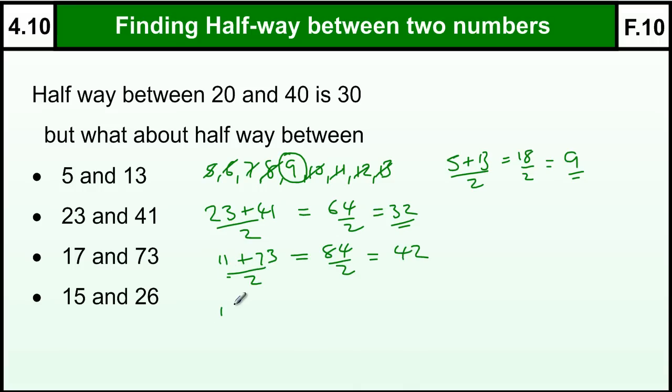And 15 and 26, now this is quite a tricky one. 15 plus 26 is 41, and half that, well half of 40 is 20, and half of 1 is 0.5. So 20.5 would be halfway between 15 and 26. Okay, so that technique will always work, and it's much quicker than writing out all the numbers and crossing them off.